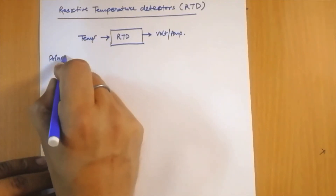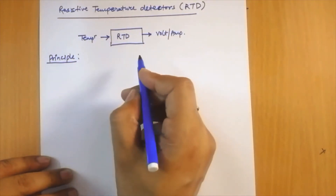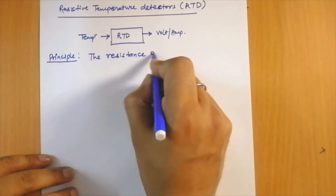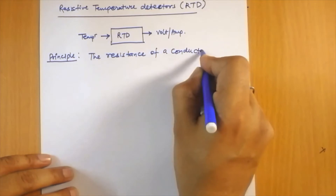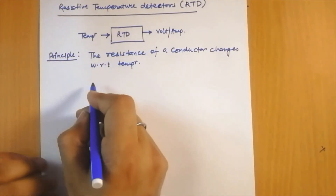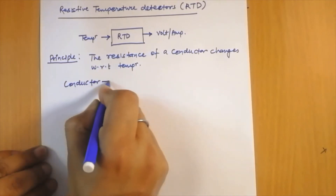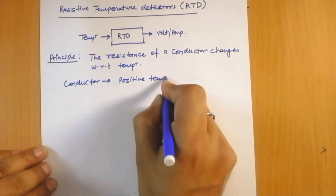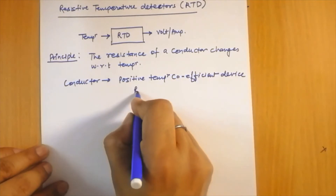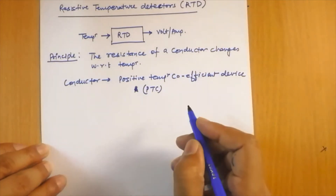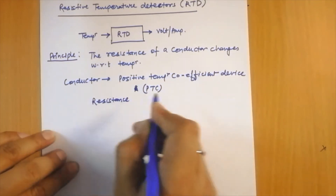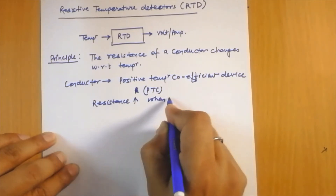The basic principle of RTD is based on the fact that the resistance of a conductor changes with respect to temperature. A conductor is a positive temperature coefficient device, abbreviated as PTC. In positive temperature coefficient devices, the resistance of the device increases when temperature increases.